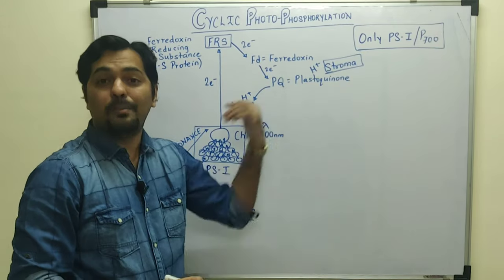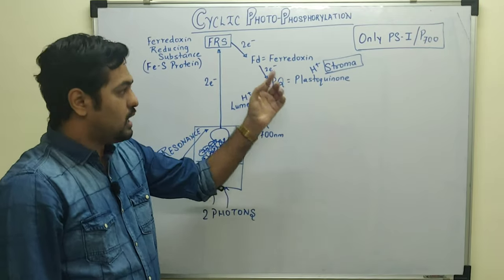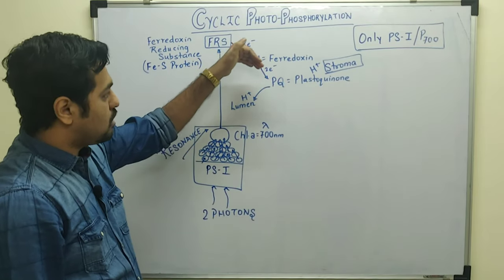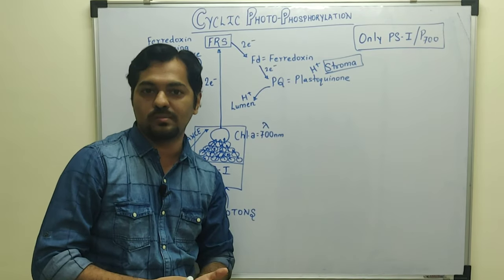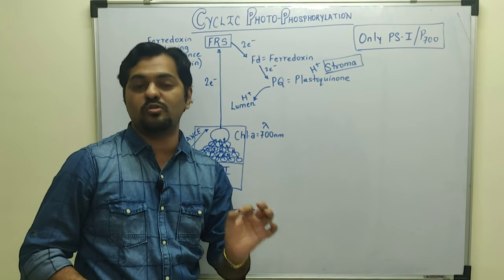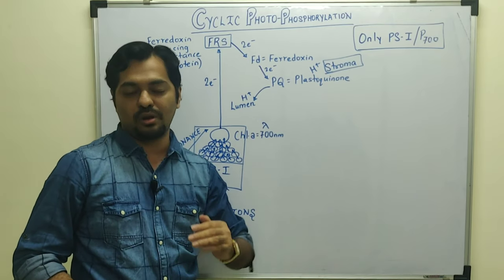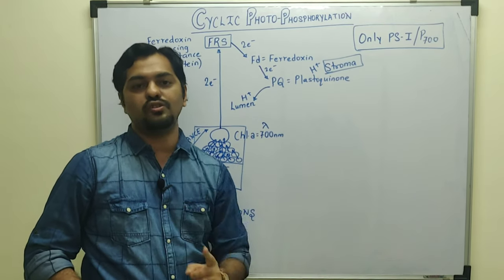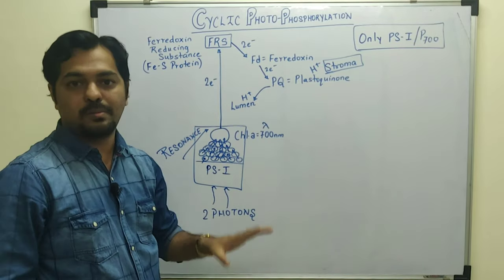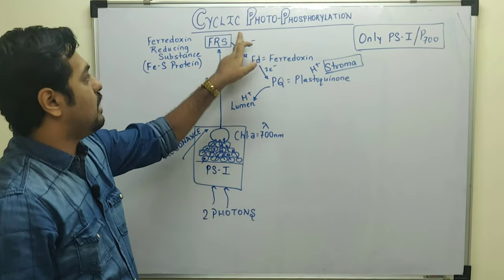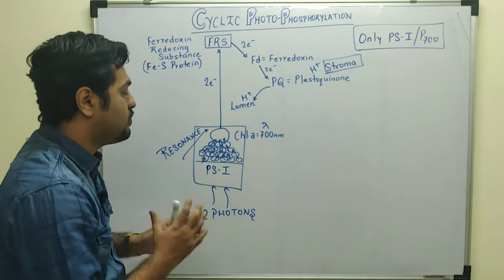These protons are being pumped using the energy provided by the electrons — the electron's energy is used for pumping the protons. This is similar to the electron transport system in aerobic respiration, where electron energy is also used for pumping protons. This process is therefore called cyclic ETS, just as non-cyclic photophosphorylation has its own non-cyclic ETS.